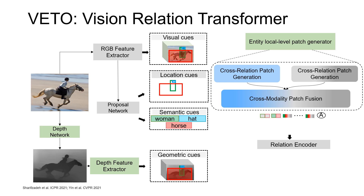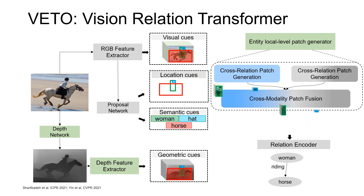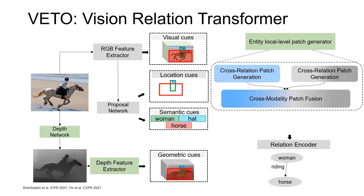Thus, tokens corresponding to entity pairs — woman and horse — are processed to predict the riding relation. Similarly, we get the relation prediction for woman and hat entities.